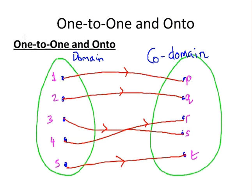Here's an example of a function that is both one-to-one and onto. We can see that each element of the co-domain has one distinct ancestor in the domain, and each element of the co-domain has an ancestor. So it obeys both requirements to be one-to-one and onto.